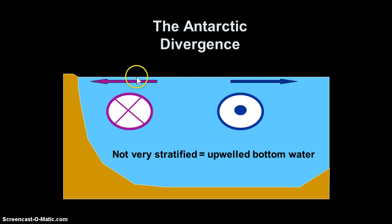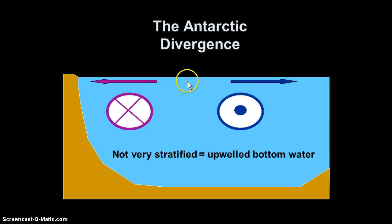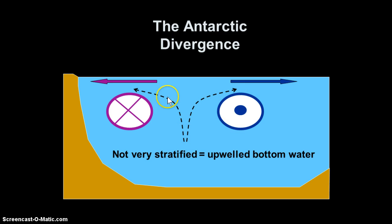When you have a divergence, the surface waters are moving away from that zone and need to be replaced from somewhere — and that's right, it gets replaced from down below. So what does that cause? An upwelling event.